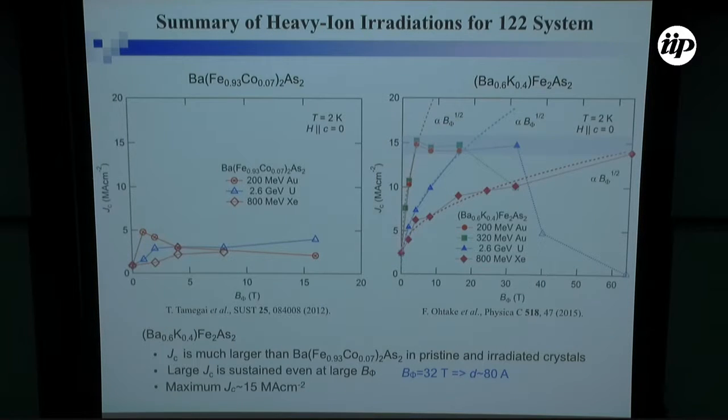This is a comparison between barium iron-cobalt system 122 and barium-potassium system. This one has relatively lower JC, even after the irradiation. The barium-potassium case, in the pristine state, as I said, it's roughly 3 mega-amps. But after irradiating various kinds of ions, we can go up to 15 mega-amps per square centimeter.